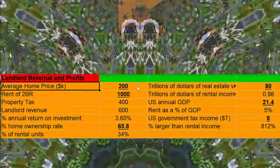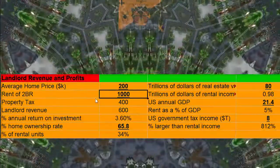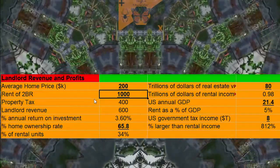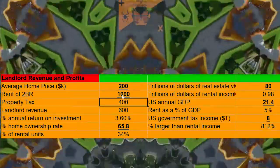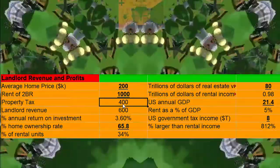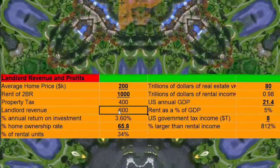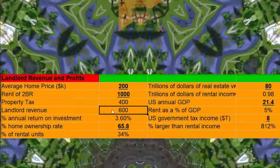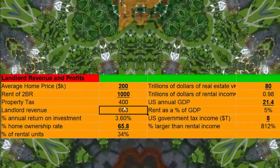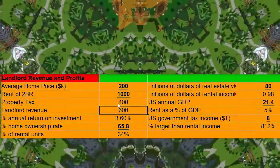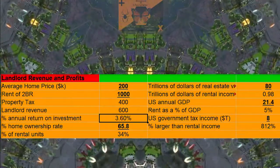We have our average home price in thousands, our rent for an average apartment — two bedroom — whatever. Property tax is removed from the 1,000 here, because we want to get our landlord revenue or landlord profits. This doesn't include mortgages, so it's a little vague.